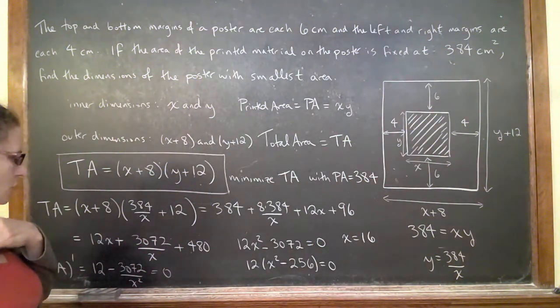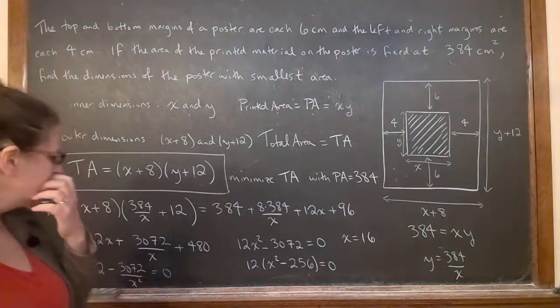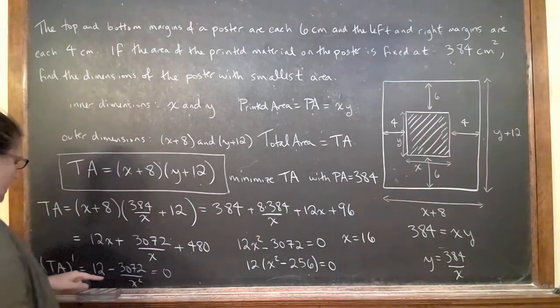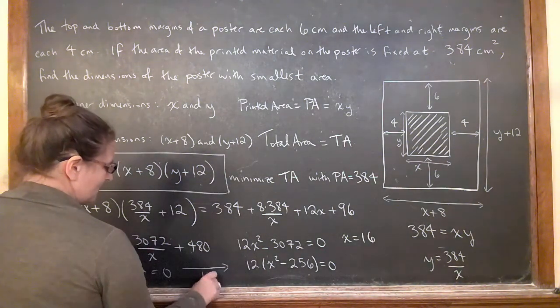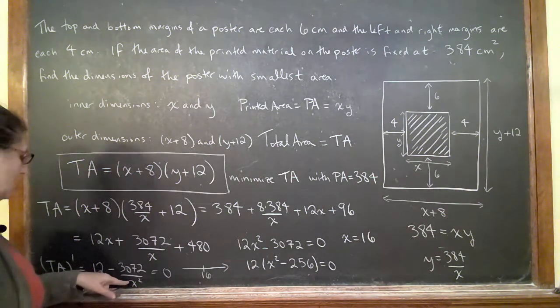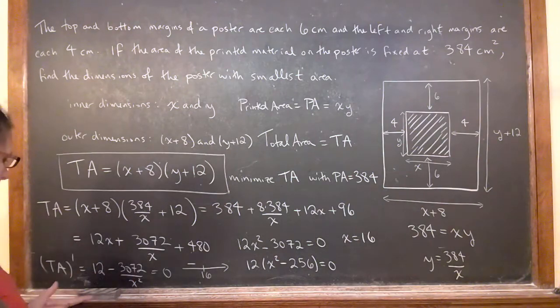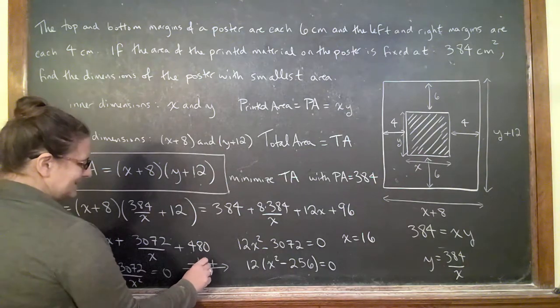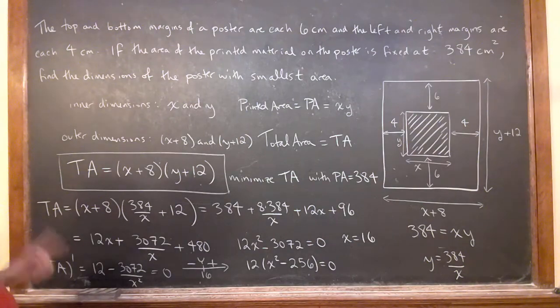And of course, also negative 16, but we don't want that one. If I go back to this and check my sign chart just around 16, because I don't care about negative 16. If I put in something much smaller than 16, like 1, I'm going to make something negative. I'm going to put in something much bigger, I'm going to make something positive. So I can see that this is indeed the minimum. I've checked that I've got my minimum at x equals 16.